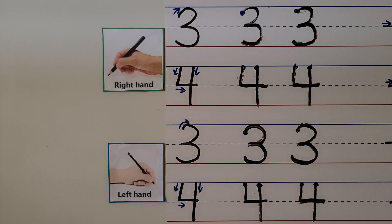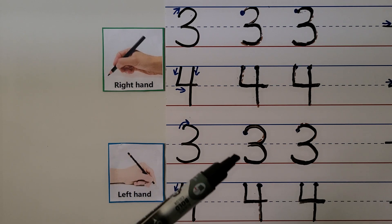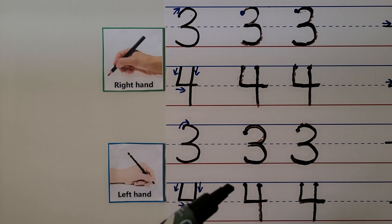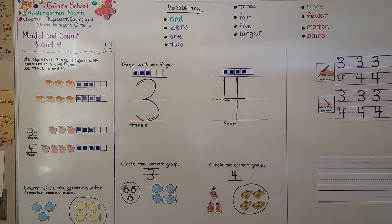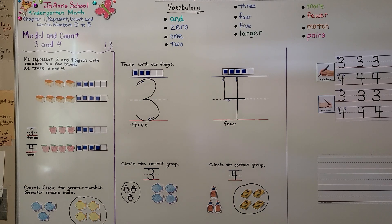Make sure your numbers are facing the correct way. The number 3 is open on this side, and the number 4 has this bent L-shape on this side. You can practice counting 3 objects and 4 objects. I hope you have a wonderful day, and join me next time for Lesson 1.4 when we count and write 3 and 4 with our right and left hand. Bye!